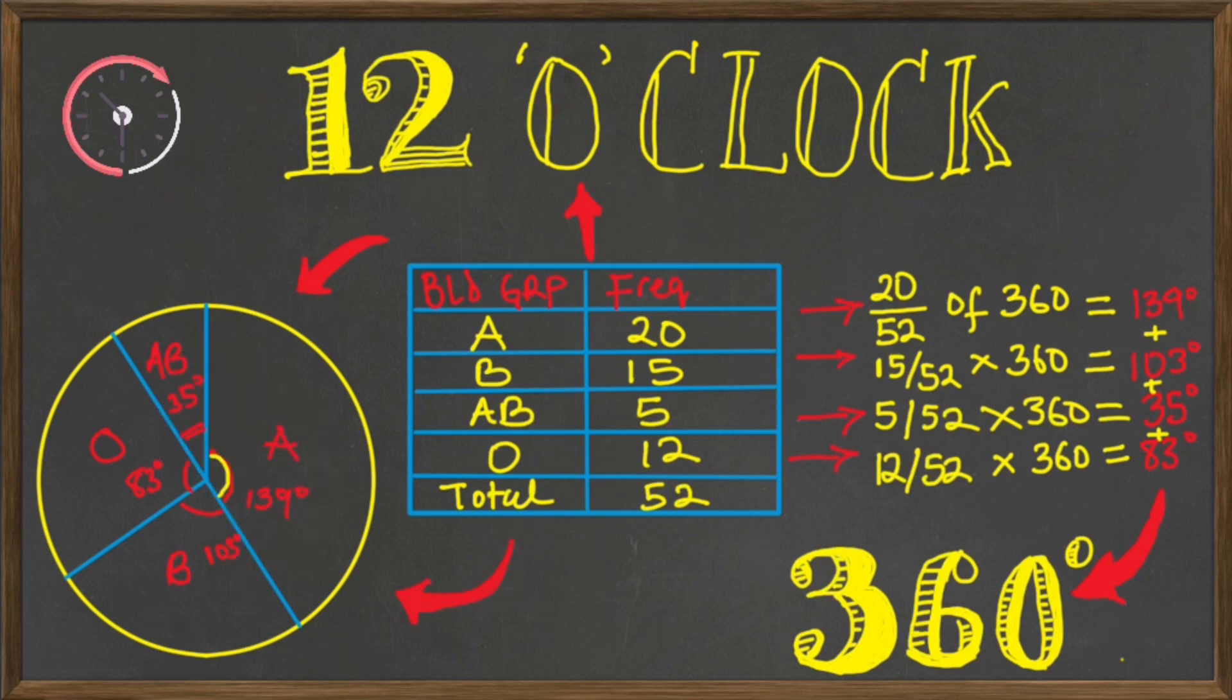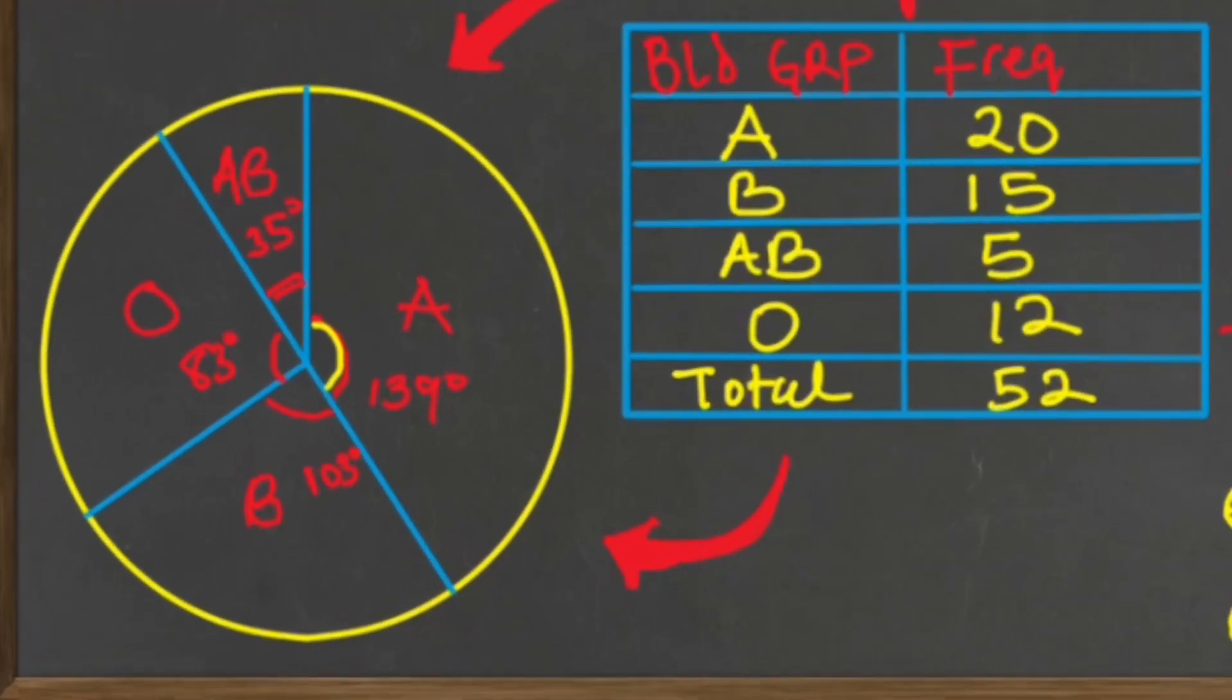So here we are. We have an awesome pie chart that clearly represents the blood group data for donors at the hematology department for that particular day.